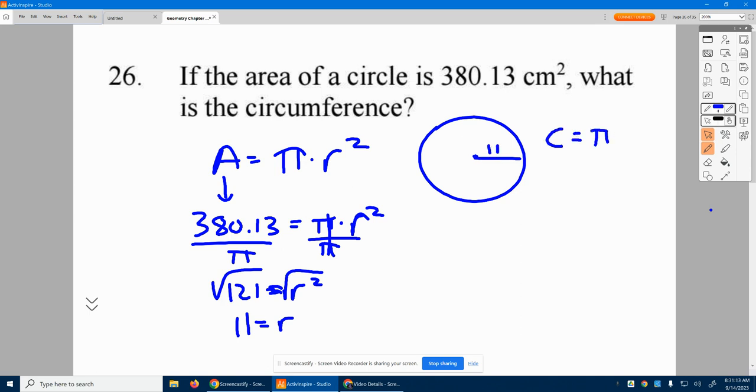I now can get the circumference. π times diameter, π times, well, the radius is 11, so what's the diameter? 22.